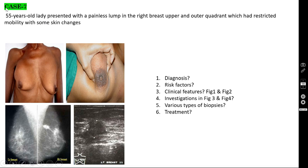Case number 7: a 55-year-old lady with a painless lump in the right breast, upper and outer quadrant, with restricted mobility and skin changes. You are seeing a lump in the upper outer quadrant of the right breast, with the nipple elevated on that side. You are seeing peau d'orange appearance. The diagnosis is most probably carcinoma of the breast, to be confirmed by mammogram and true-cut biopsy.